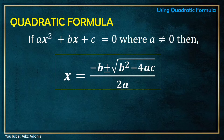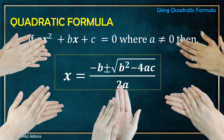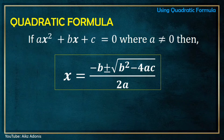So, how was the song? Did you already memorize the quadratic formula? I hope you did. So again, what is the quadratic formula? The quadratic formula is x equals negative b, plus or minus the square root of b squared minus 4ac, all over 2a. I am still singing it — it's maybe because na-LSS ako.